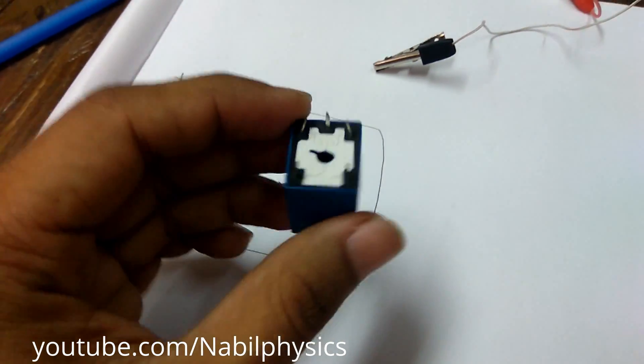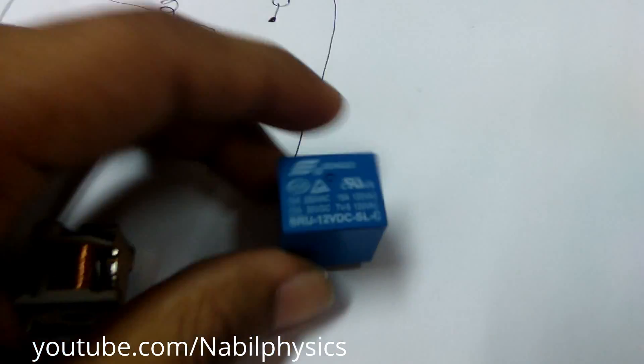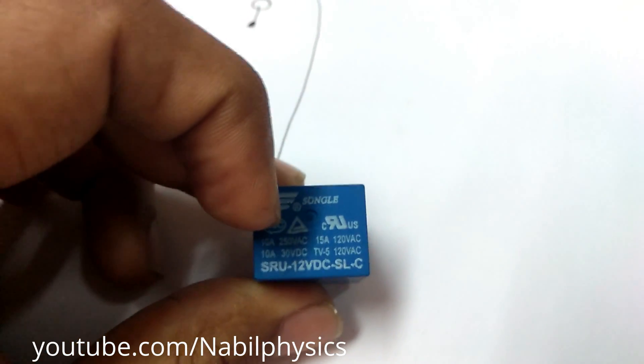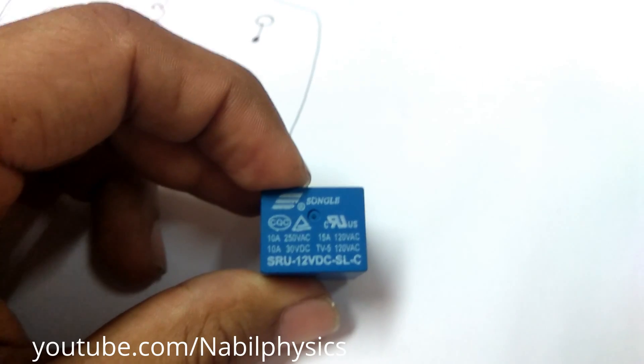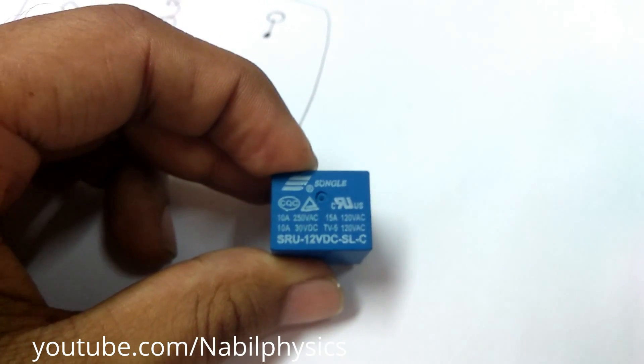This is a very basic relay which you can see here. Here we can see 10 ampere 250 volt AC. That means if you operate a load which needs 250 volt.